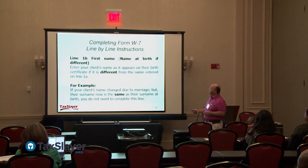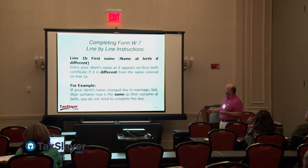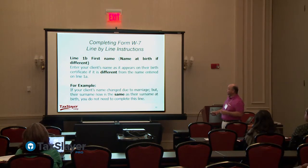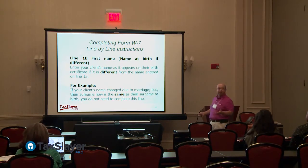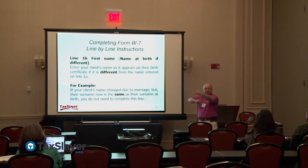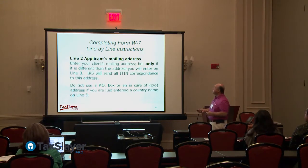Line 1b is name at birth if different — if the name has changed since birth due to marriage or a legal name change, put it there. However, if the surname is now the same as at birth, you don't need to complete this. For example, if the client got divorced and reverted to their original name, there's no need to complete it. Line 2 is mailing address.